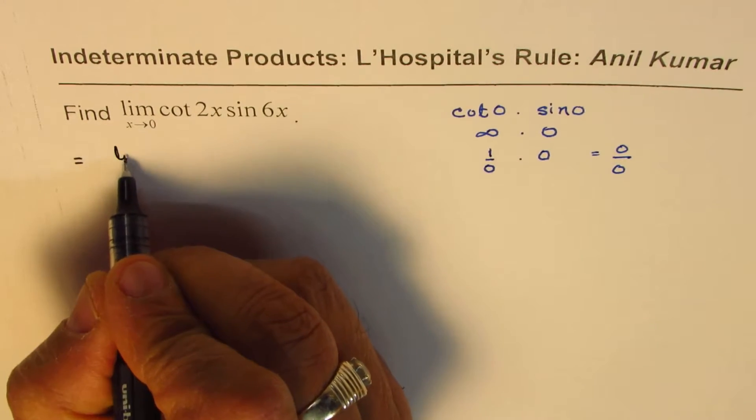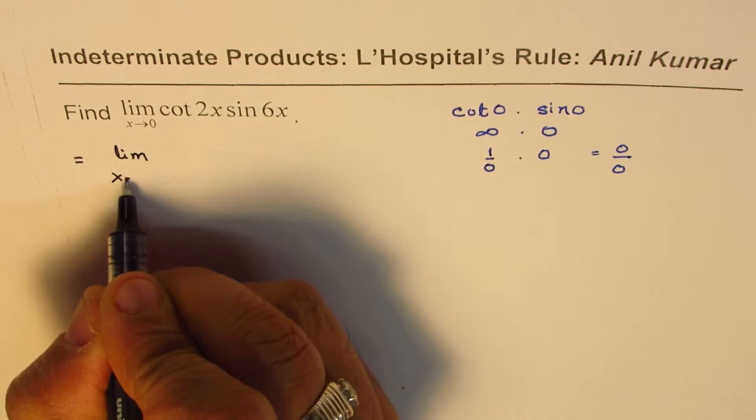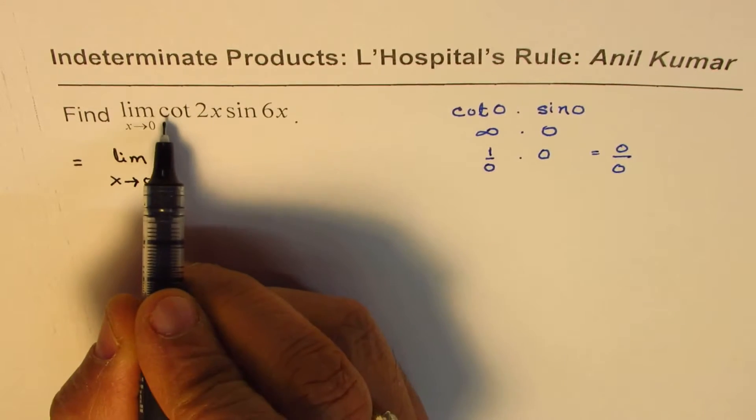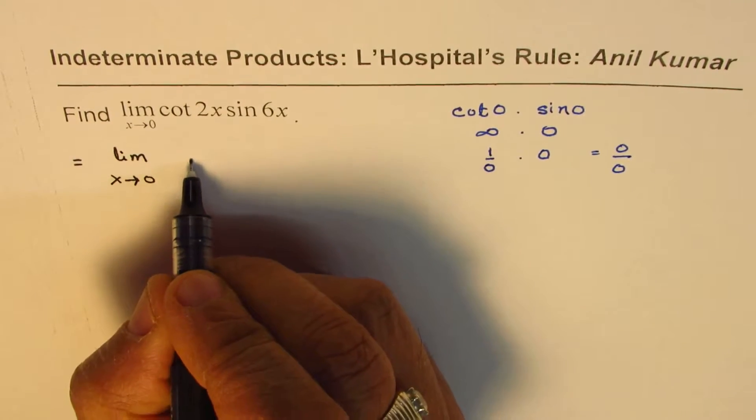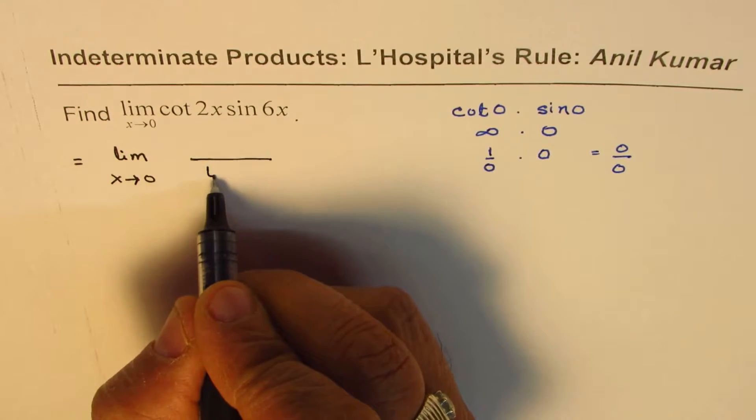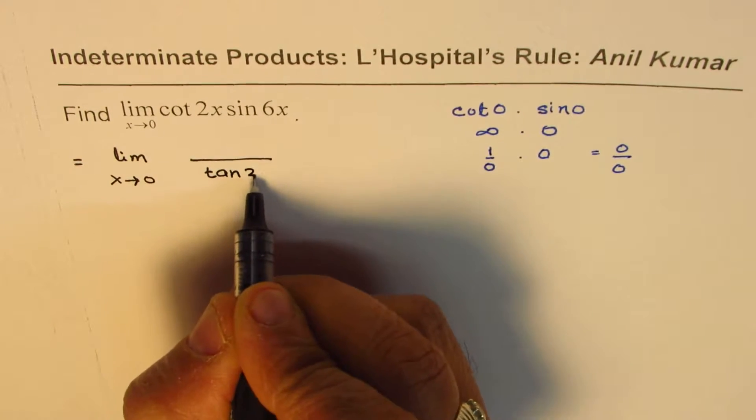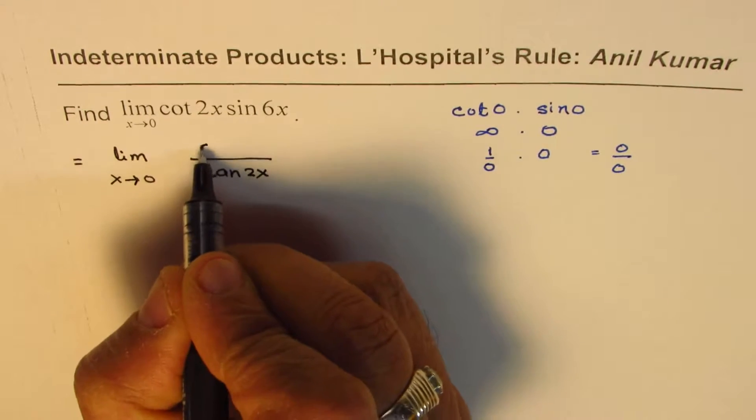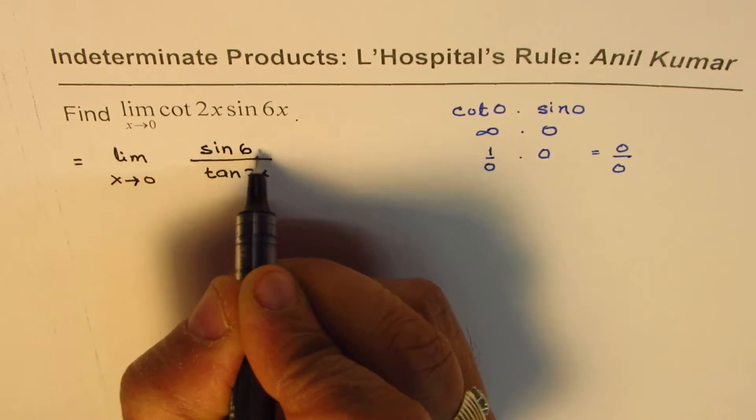So now the question is, we need to find limit when x approaches 0. So instead of cot 2x, we could write this as 1 over tan. So it could be written in the denominator as tan 2x, and we have sine 6x in the numerator.